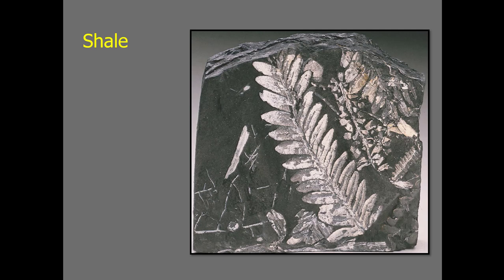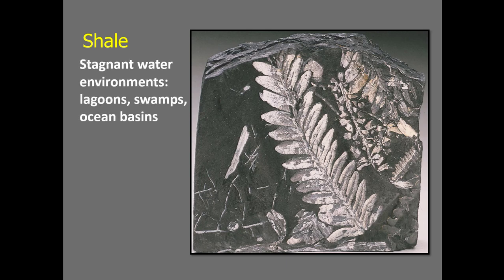The last clastic sedimentary rock — the one furthest from the source area — is called shale. Shale shows imprints of fern fossils and thin little layers of mud, because shale is basically composed of clay only. Clay will only settle in water that is pretty much completely stagnant, meaning shale represents very slow accumulation of mud. As a young geology student, learning that shale forms in lagoons meant nothing until actually seeing a lagoon.